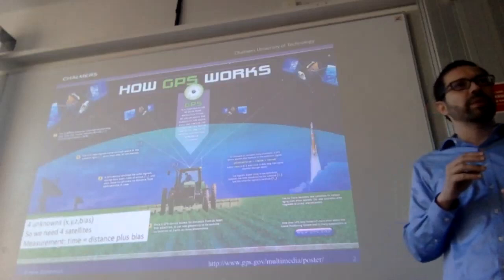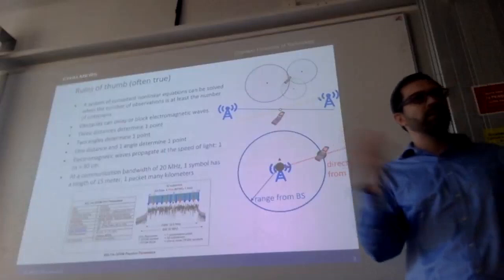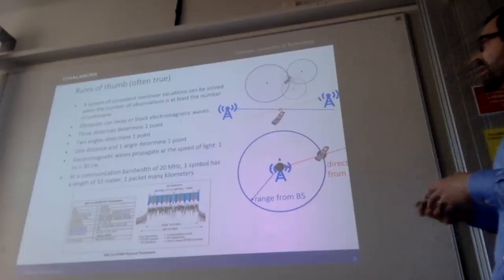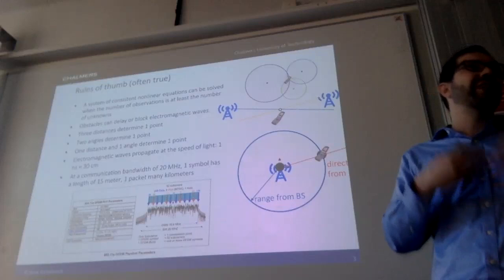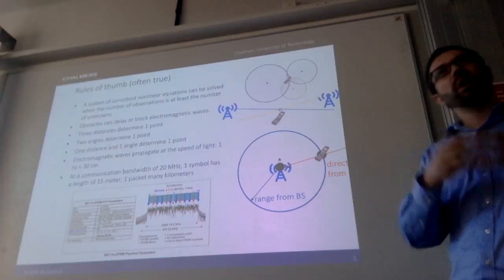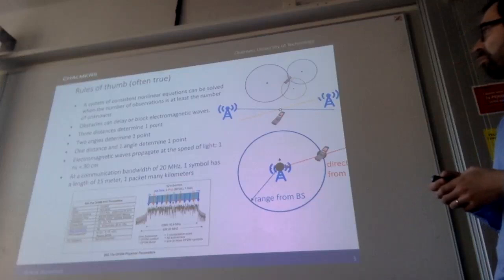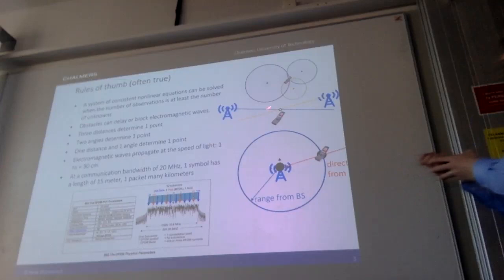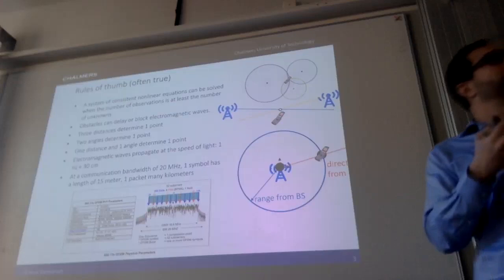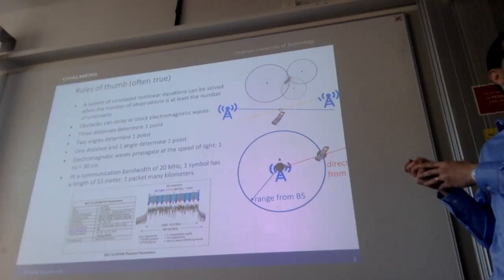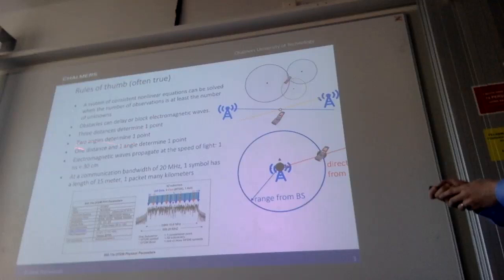This idea of four unknowns and four measurements leads me to what I call rules of thumb. My first rule of thumb is that if I have a system with n unknowns, I would like to have n observations. Obstacles can block electromagnetic waves or delay them. Another rule of thumb: when I have three distances, this determines a unique point, so I need three base stations in a plane to localize myself from distances. Similarly, two angles also determine one point, and one distance plus one angle also gives me one point.